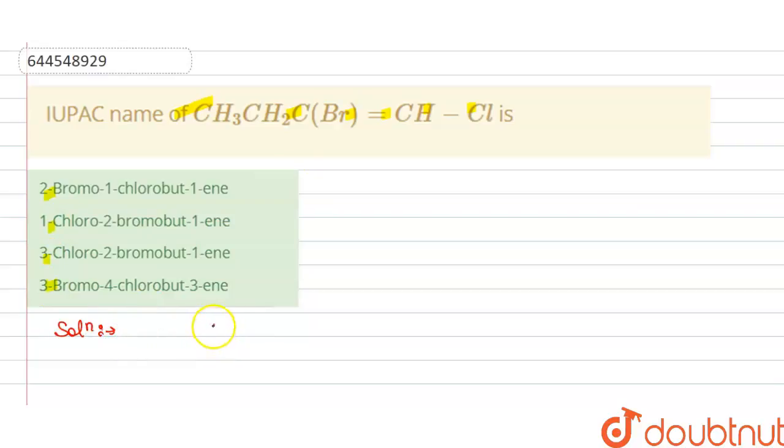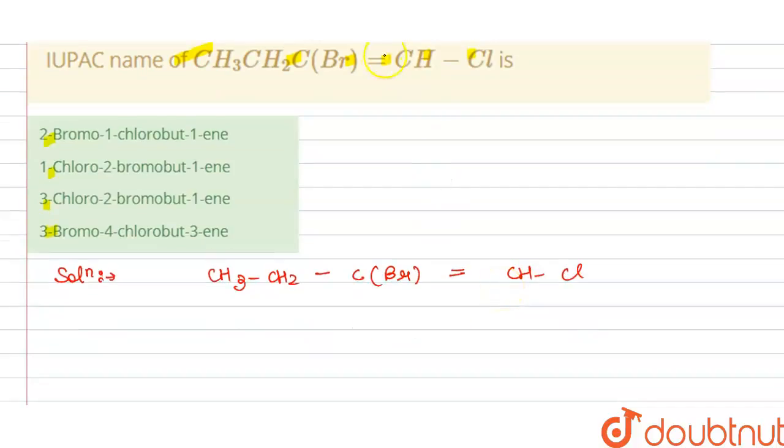So the solution of this question is: we have CH3-CH2-C and Br double bond CH and chlorine. So we start giving the priority to CH and then we give the second carbon atom...